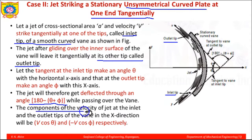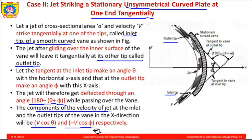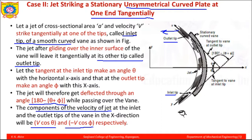The components of jet velocity at the inlet and outlet tips in the x-direction are: V cos θ at the inlet, and minus V cos φ at the outlet. The minus sign is because the component V cos φ at the outlet is directed towards the negative x-direction, as established in the previous lecture.